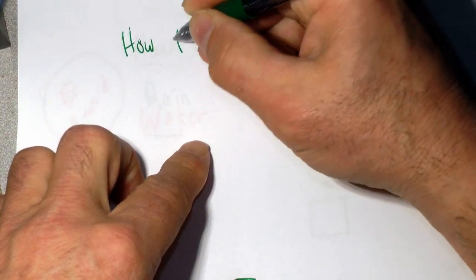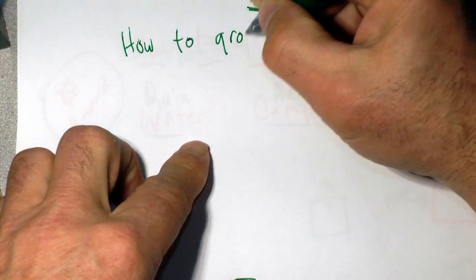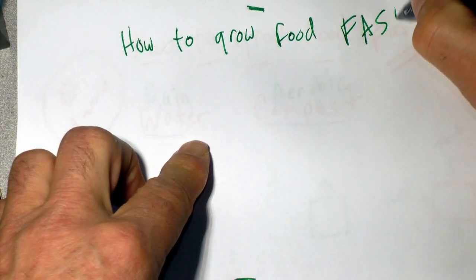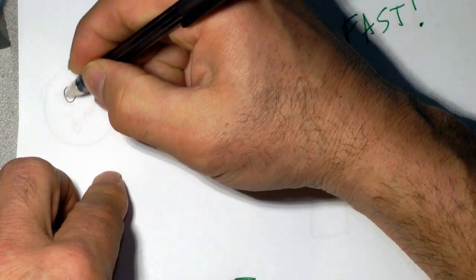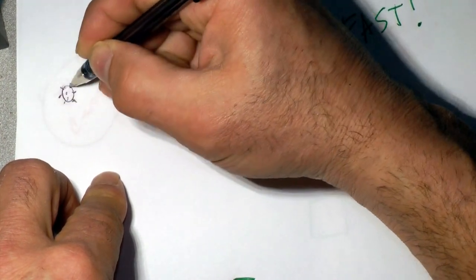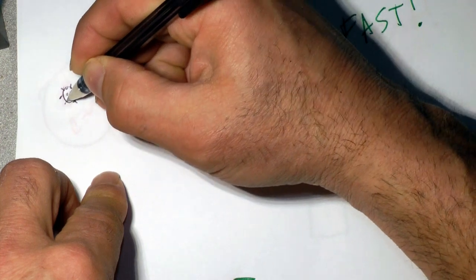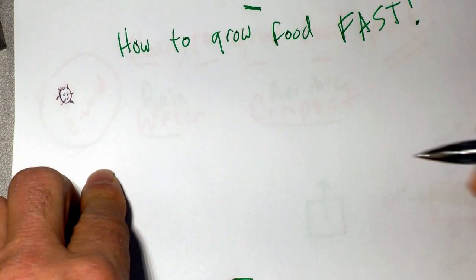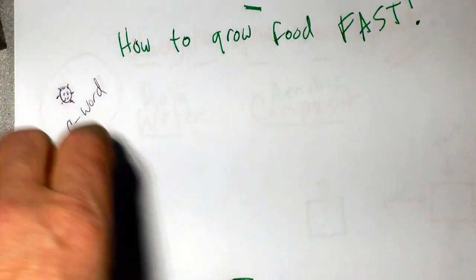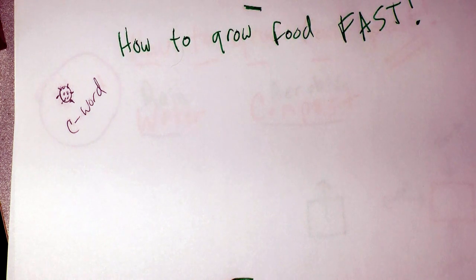This is a video about how to grow food fast, and this is a reaction to this thing going around — I won't even say it because the bots will probably shut it down or restrict it somehow. I'll just call it the C word, because I believe people are going to be interested in growing food fast.